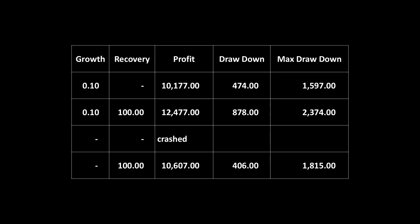Having a growth factor plus recovery gives the greatest profit but also the greatest drawdown. A growth factor with no recovery gives the lowest profit. No growth with recovery gives something in the middle. And no growth with no recovery — which should be the least risky — crashes the account. At this point someone will be thinking the drawdowns are too high and I shouldn't be recommending this, so let me say again: I don't make recommendations, I'm not recommending this strategy, I don't give advice — I show you how to write code.